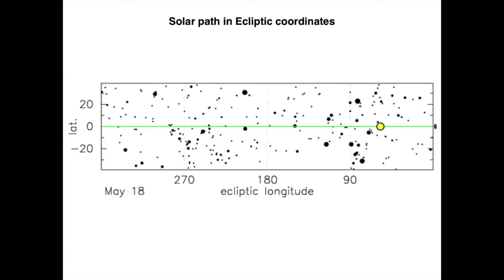The coordinates that we're going to use in the ecliptic are the ecliptic longitude and ecliptic latitude. The Sun over the course of the year does not change its ecliptic latitude by definition. The Sun is at the ecliptic.